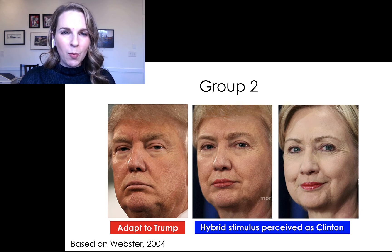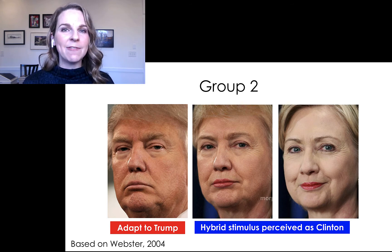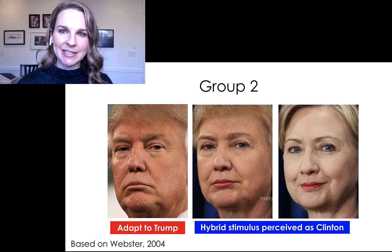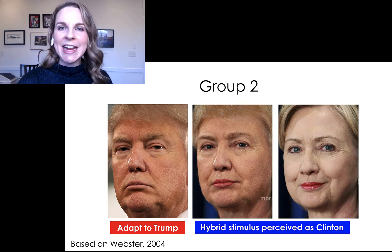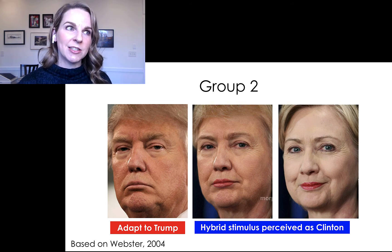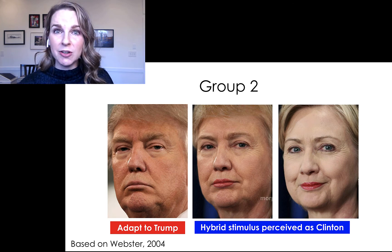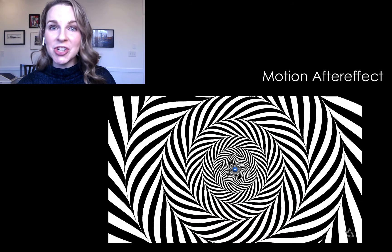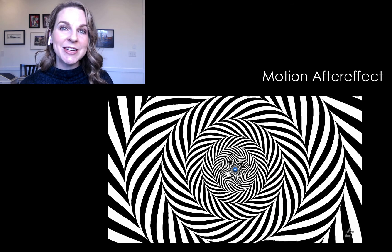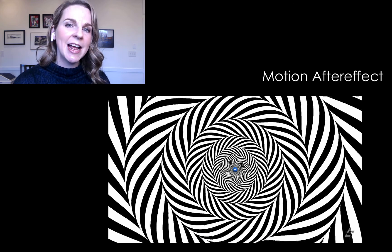This is a fun illusion, but what does it tell us exactly — what is its pedagogical value? A surprising demo is great, but only if it can actually teach our students something interesting and important. The face identity aftereffect can teach our students the same basic principles that other aftereffect illusions can teach them. I like to use this demonstration alongside other aftereffect illusions, such as the color aftereffect and the motion aftereffect. In both of these illusions, we see that adapting you to a particular stimulus causes you to perceive some neutral stimulus as its opposite.